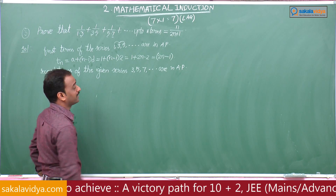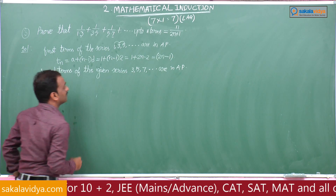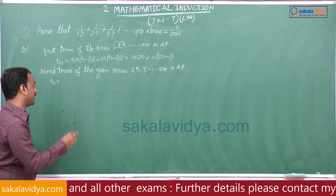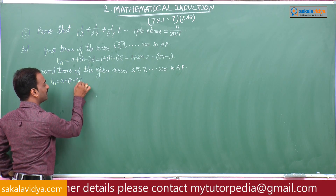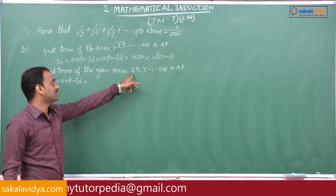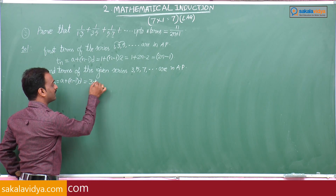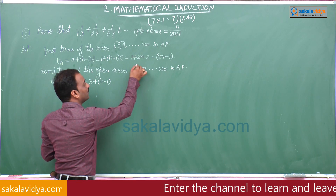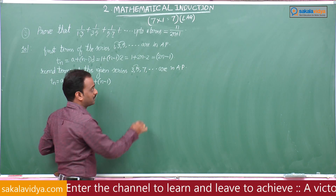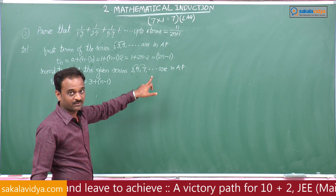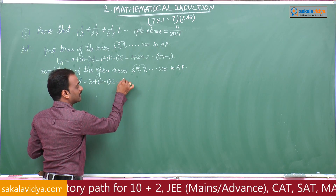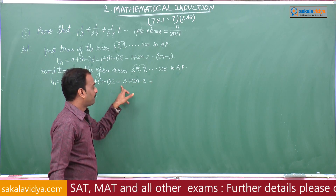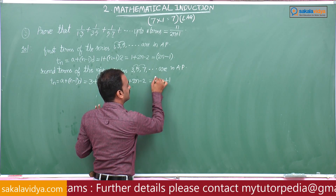We find the nth term of the second terms 3, 5, 7, ... using the same formula a + (n−1)d, where a = 3 and d = 2. So tn = 3 + (n−1)×2 = 3 + 2n − 2 = 2n + 1.